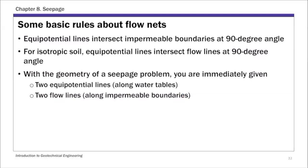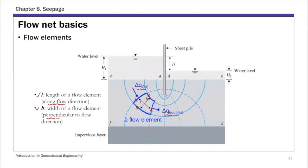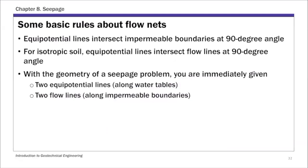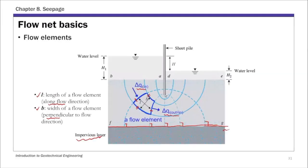There are some other basic rules about flow nets. First, equal potential lines intersect impermeable boundaries at a 90-degree angle. You can see all the equal potential lines meet the impermeable bottom boundary at 90 degrees. Second, for isotropic soil, equal potential lines intersect flow lines at approximately a 90-degree angle — but again, this is for isotropic soil only.